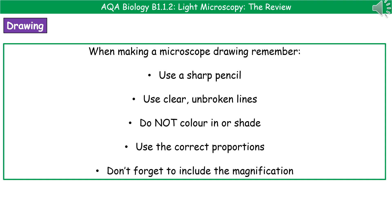Secondly, use clear unbroken lines — none of that shading or cross-hatching you do in art, just a nice clear decisive unbroken line. Do not colour in or shade anything on the diagram; it should be a line drawing. If we're drawing something like a cell, remember to use the correct proportions for any of the subcellular structures present. If asked to label certain things, use a ruler to draw a nice straight line to the actual feature, taking it outside the cell to write your label. Don't cross your lines, and don't forget to include the magnification.